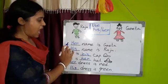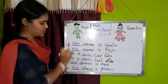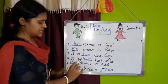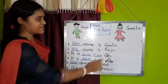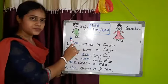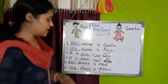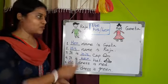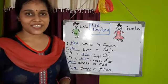Her name is Geeta. His name is Raju. It is his cap. It is her hat. Her dress is red. His dress is green. We use his or her according to their gender. Thank you for watching this.